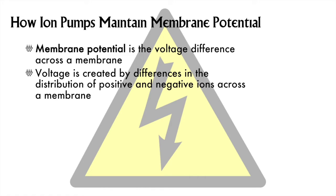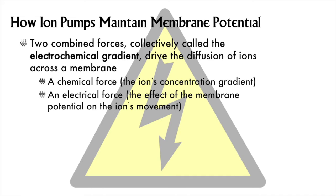Ion pumps like the sodium-potassium pump have the job of creating a membrane potential, or voltage, across a membrane. Electricity is essentially a special case of a concentration gradient — specifically, it is a charge gradient. When you put a battery in something, you have a stored electric charge gradient.